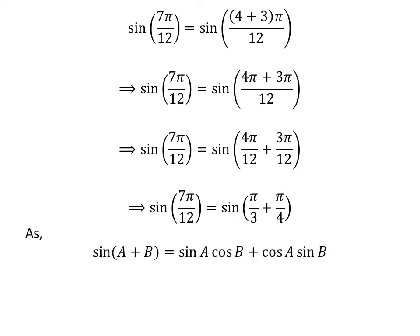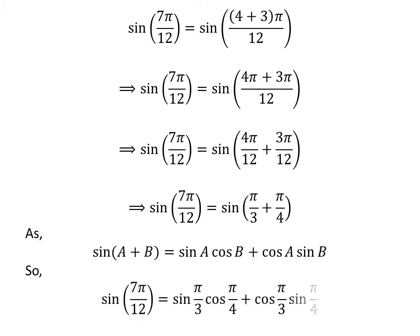We know the famous trigonometry identity: sin of a plus b is equal to sin of a times cos of b plus cos of a times sin of b. Application of this identity gives us sin of 7 times pi upon 12 is equal to sin of pi upon 3 times cos of pi upon 4 plus cos of pi upon 3 times sin of pi upon 4.